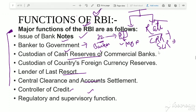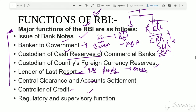RBI also keeps the custody of cash reserves — the CRR — and foreign currency reserves. As lender of last resort, RBI provides funds to banks when banks have no other sources of funds available. RBI also acts as a clearing house. Regarding credit control, RBI has the power to control the volume of credit that banks can extend in the market.